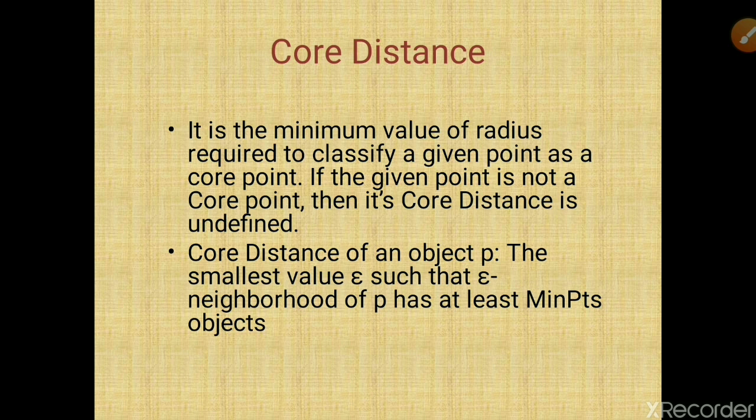Core distance is defined as the smallest value of epsilon such that the epsilon neighborhood of point p has at least the minimum number of objects. That is, it is the minimum value of radius required to classify a given point as a core point.